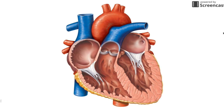For our class, the path of blood will always start in the body. Blood entering the heart from the body is called deoxygenated blood. This means that the red blood cells are not carrying oxygen. Instead, they are carrying carbon dioxide, which is a waste material made by our cells in a process called cellular respiration.